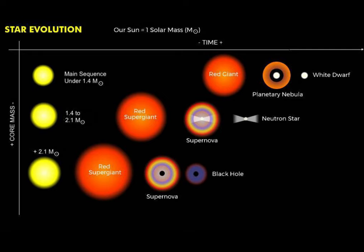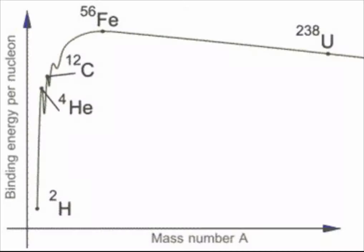Stars with masses around our sun fuse into carbon or oxygen, while stars with higher masses can continue this pattern all the way up to iron. But iron is unusual in that it is extremely stable and resistant to fusion. This is due to iron having the highest binding energy per nucleon out of any atom. It means that it is so stable that more energy is required for fusion than it produces, which isn't viable.